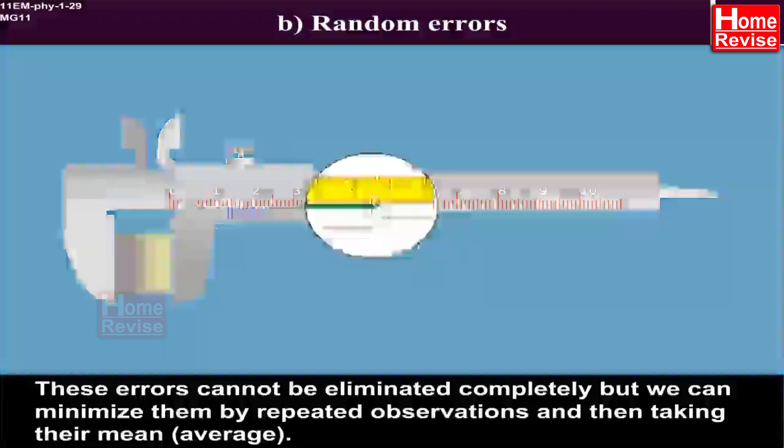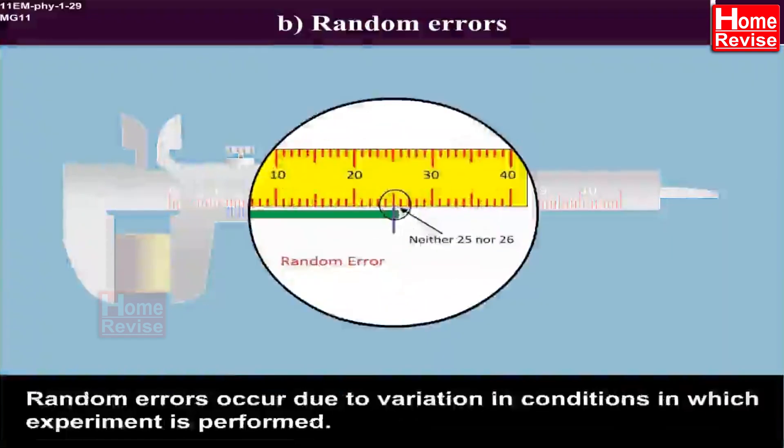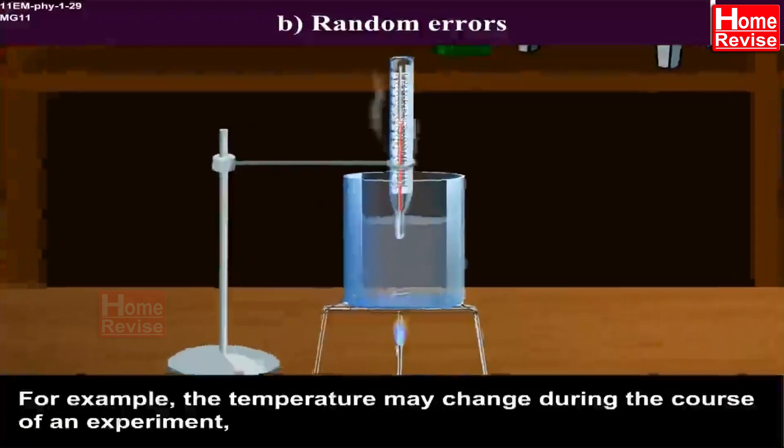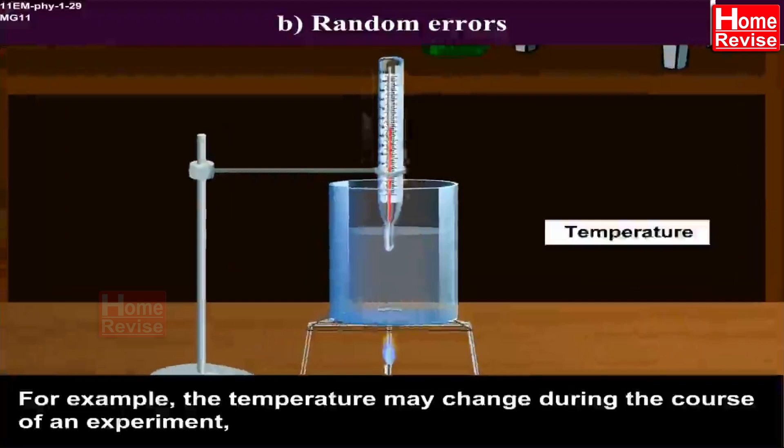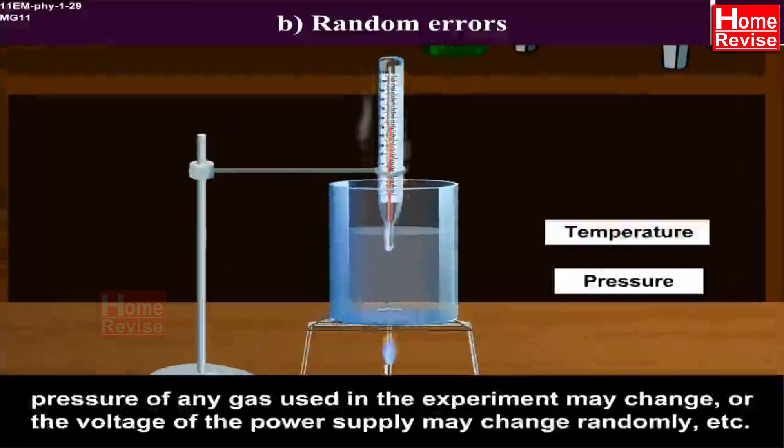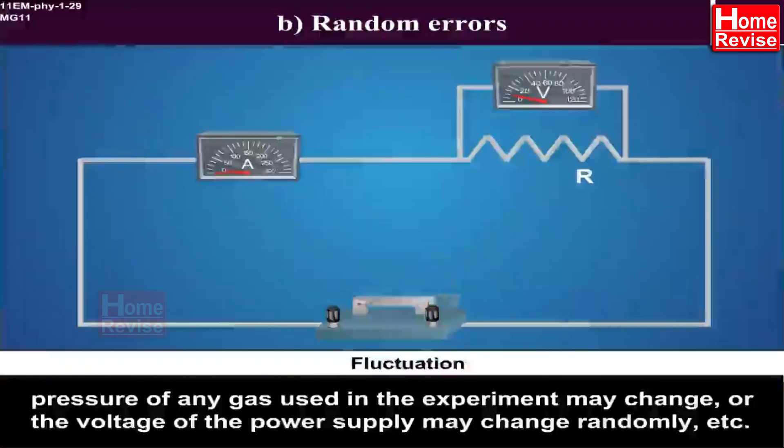i.e. average. Random errors occur due to variation in conditions in which experiment is performed. For example, the temperature may change during the course of an experiment, pressure of any gas used in the experiment may change, or the voltage of the power supply may change randomly, etc.